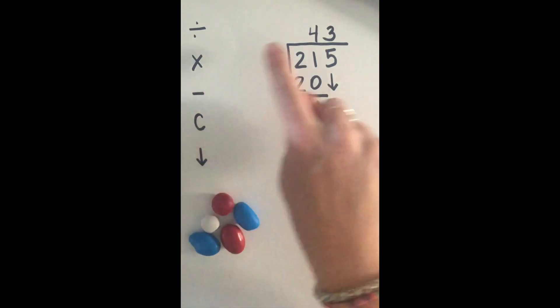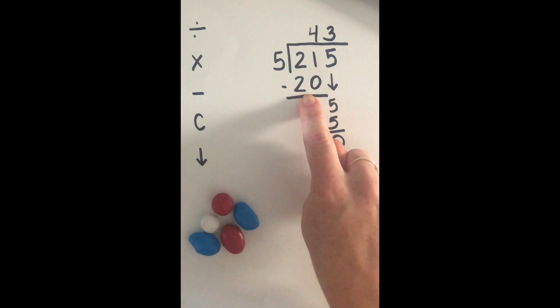Step two is to multiply. Four times five equals 20. Step three, subtract. Subtract 21 minus 20 equals one.